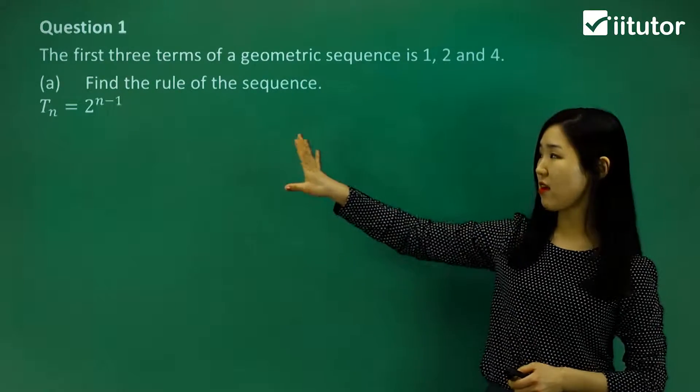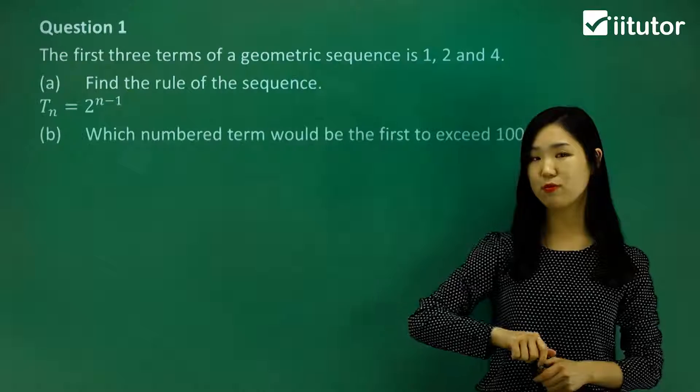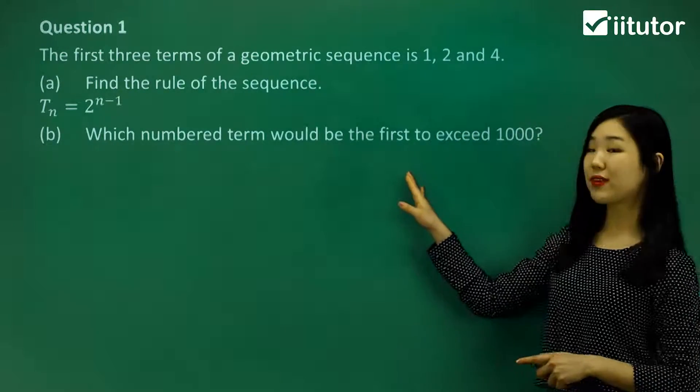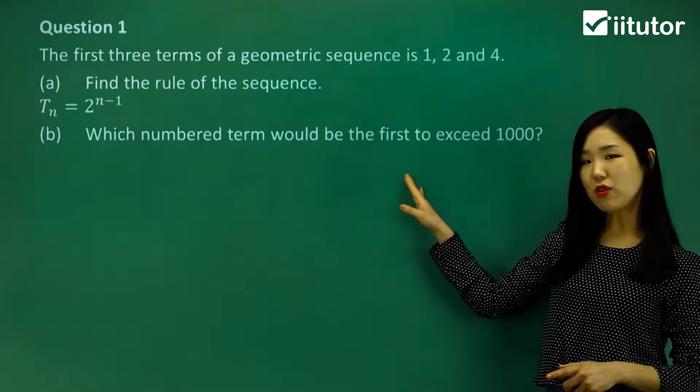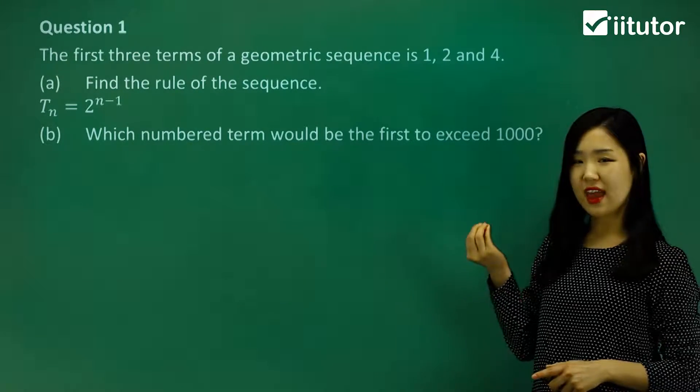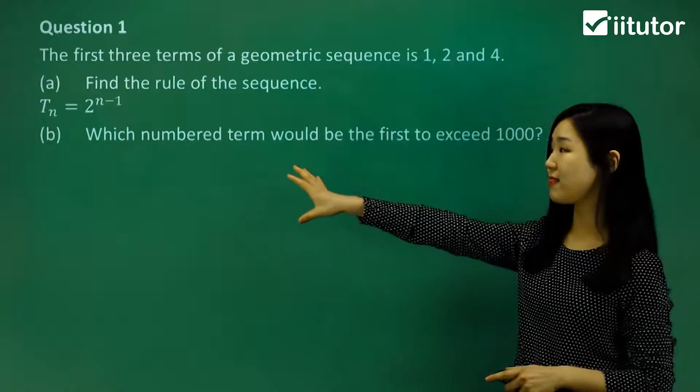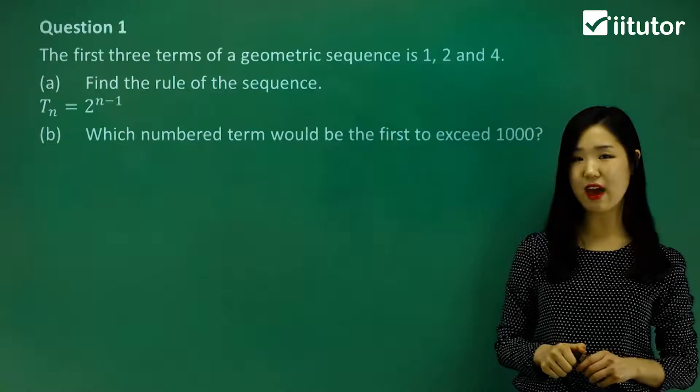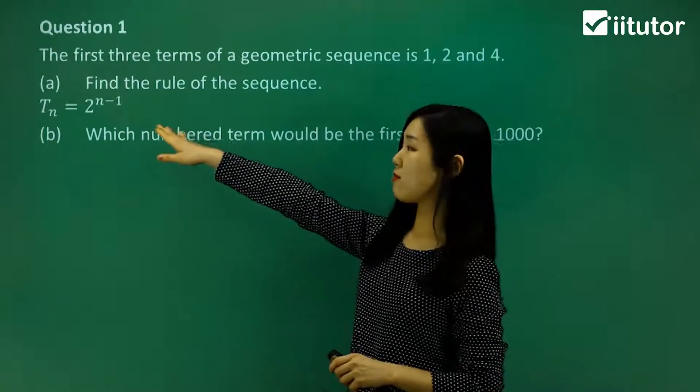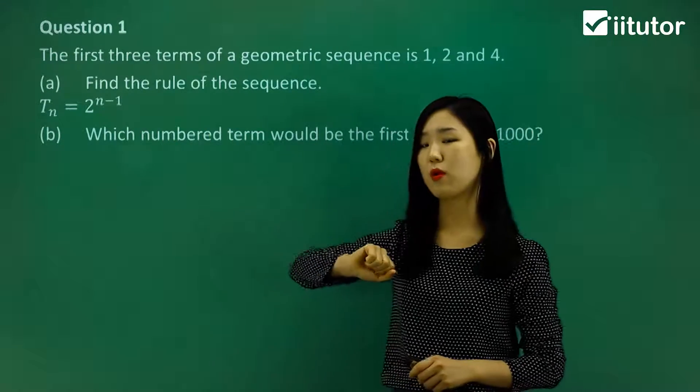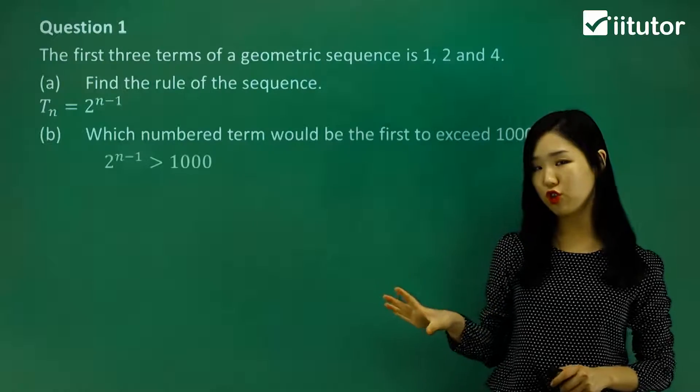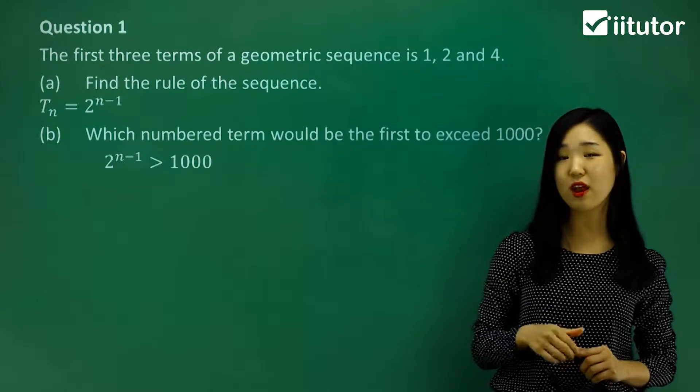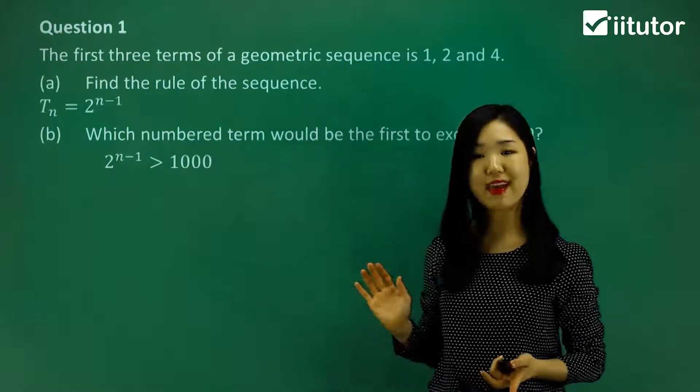Now let's move on to part B. It says, which numbered term would be the first to exceed 1000? So we want to know which term, what the nth term is, that makes that term greater than 1000. The first one that exceeds 1000. So you see how this is our term formula, the Tn. That's what we're going to be using. So 2^(n-1), I want that to be just exceeding 1000, and I want to know what value of n makes this happen.